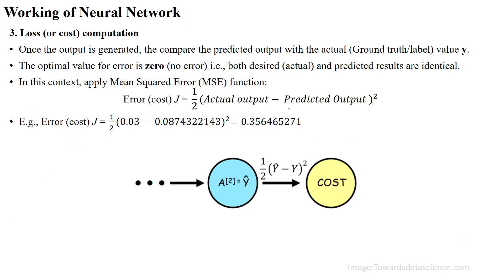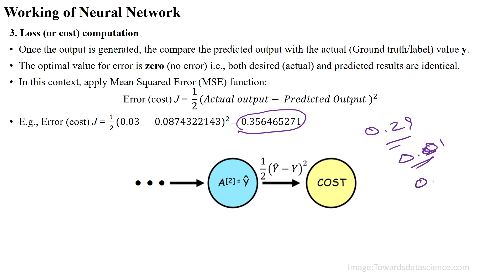The error should reduce each iteration — for example, from 0.356 down to 0.29 in the second iteration. We keep repeating this process until the error is close to zero. If the error value stays the same for two or three consecutive iterations, we stop the algorithm. This indicates convergence — we cannot improve the performance further.